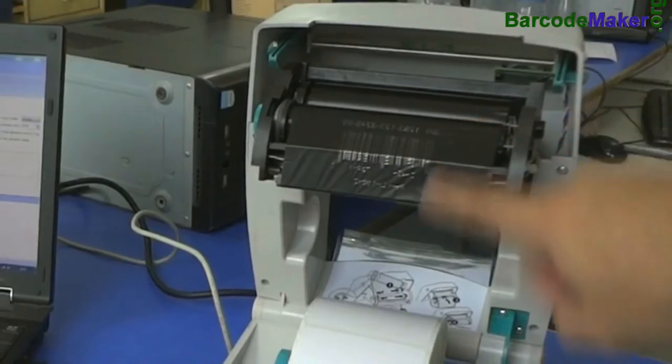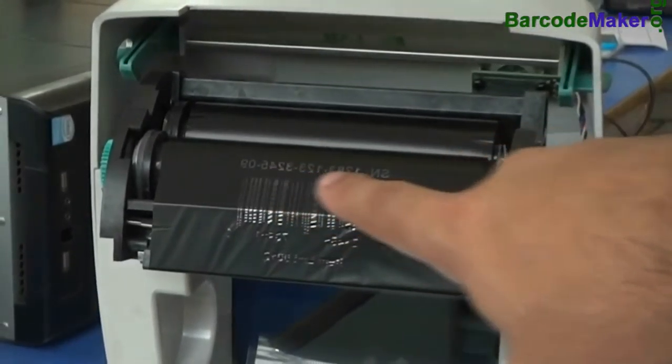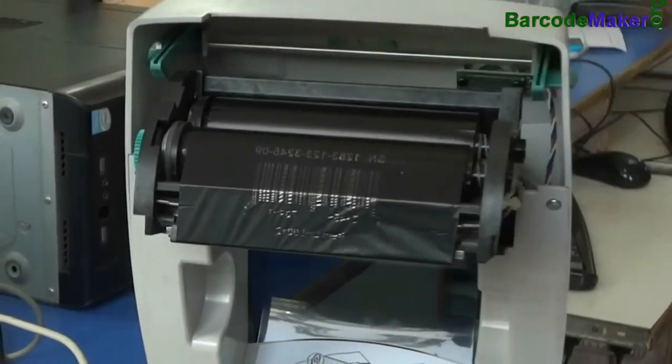Thermal printing is a digital process which produces printed images by selectively heating coating. The coating turns black in the area where it is heated and produces an image.